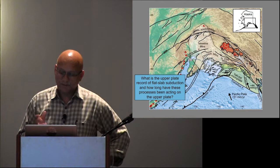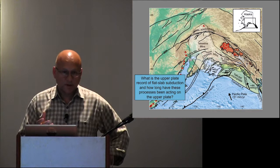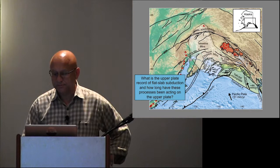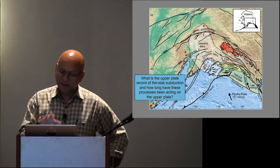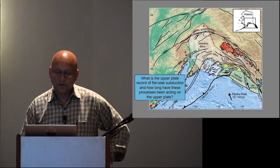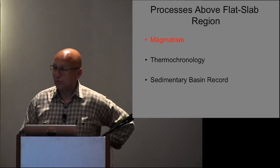Where my research team comes into play is that we were interested in what is the upper plate record of flat slab subduction processes and how long have these processes been acting. We're sedimentary geologists - we look at basins, at the record of deformation in the upper plate and the sedimentary response to that. Here's the unsubducted part of the Yakutat terrain that Plafker defined. This dashed line shows the geophysically imaged part of the slab that's been subducted. In this area we have the Wrangell volcanic belt, these triangles are active volcanoes. And here we have the northern extension of the Aleutians. What we tried to do is look at all the different proxies for when did flat slab subduction start and what's the record of it.